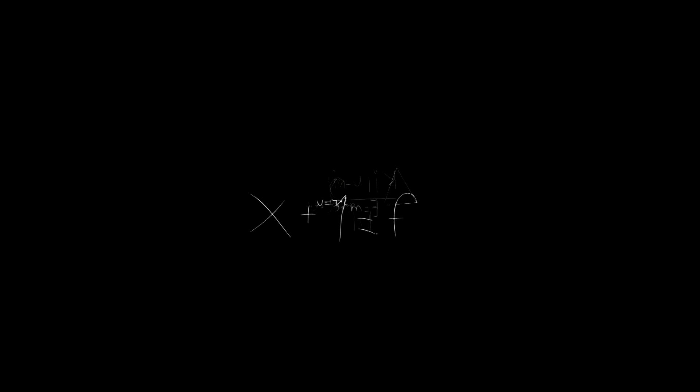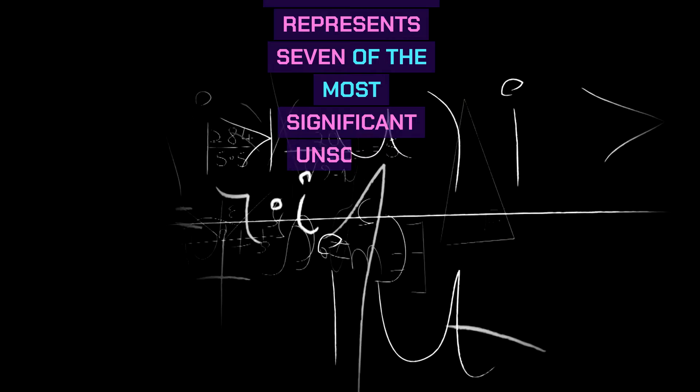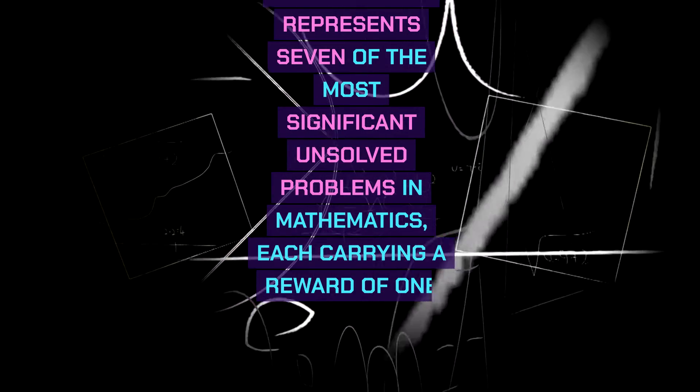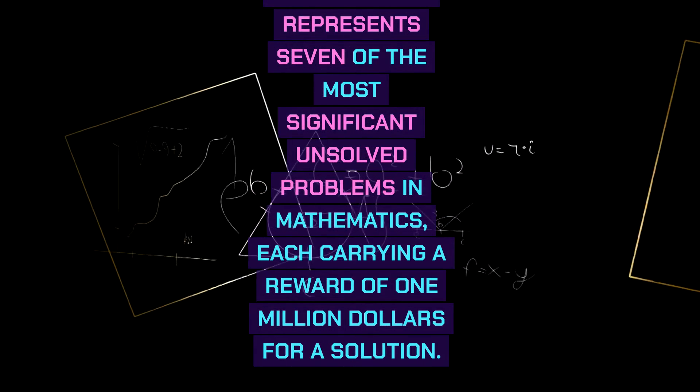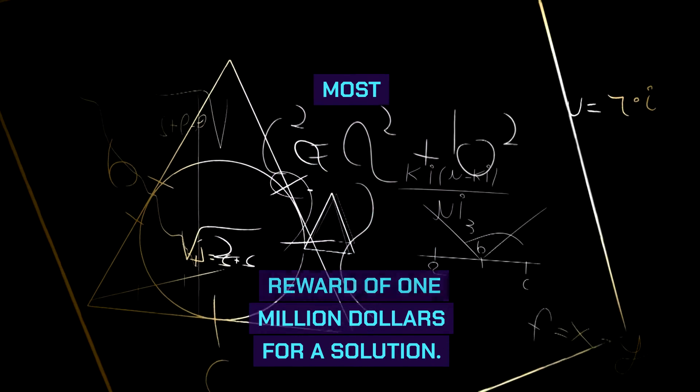The elusive nature of a formal proof has placed the Riemann hypothesis among the prestigious Millennium Prize problems. This select group represents seven of the most significant unsolved problems in mathematics, each carrying a reward of $1 million for a solution.